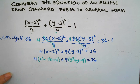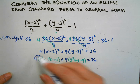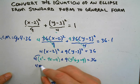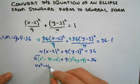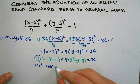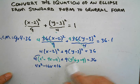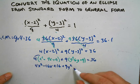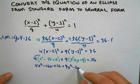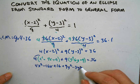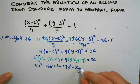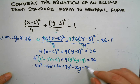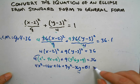Alright, so now we've got to distribute the four and the nine to each term. So it's 4x² - 16x + 16. This one will be positive 9y² - 36y + 81 = 36.